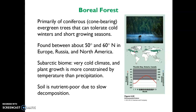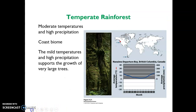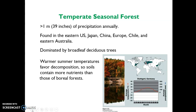The soil in boreal forests is poor in nutrients because at cold temperatures decomposition takes place slowly, so most nutrients are stored in the trees themselves rather than the soil. The next biome is the temperate rainforest: temperate means moderate temperature, rain means high precipitation, and forest means trees. It is a moderate-temperature, high-precipitation coastal biome, and being coastal is what helps moderate the temperature here. This supports the growth of very large trees like sequoias.